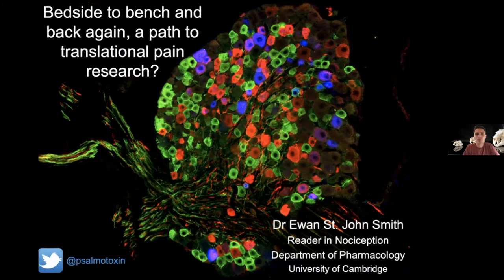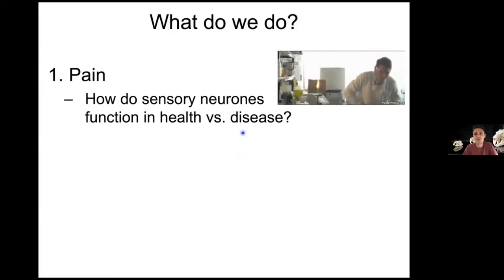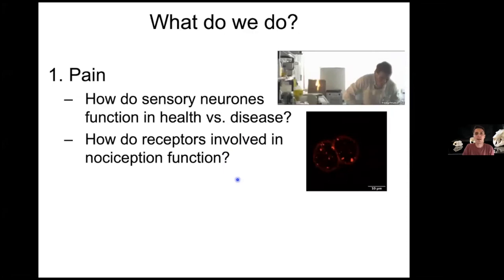As an overview: the main focus is pain, and specifically how sensory neurons function in health and disease. We look at receptor function — for example, a particular GPCR internalizing over time — so we do whole animal work as well as right down to the individual molecule.